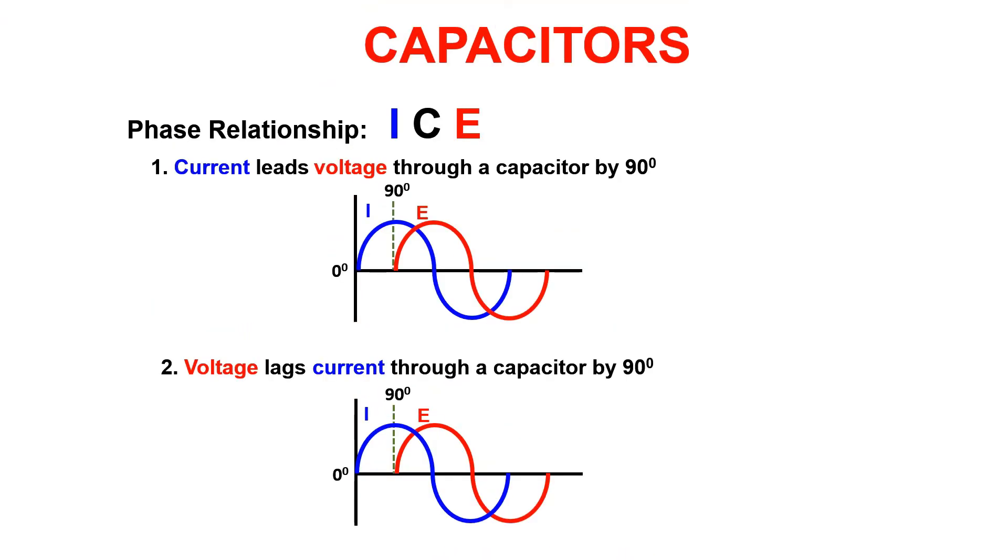If you recall we utilize the word ELI to remember the phase relationship between voltage and current in an inductor. Now we are going to use the word ICE to memorize the phase relationship for a capacitor. Current leads voltage through a capacitor by 90 degrees. We can also say the reverse is true in that voltage lags current through a capacitor by 90 degrees.